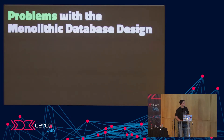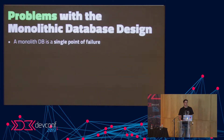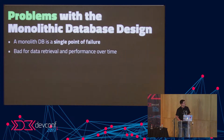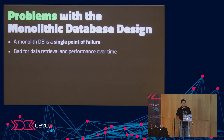The problems with a monolithic database design: mainly it's a single point of failure. If you're running 10 microservices and your monolithic database fails, everything falls over. You might have cached data, but that will become stale. It's also bad for performance over time — if multiple microservices are writing to this database, you may get locks, and you can end up with huge tables where even a simple select query becomes very slow.